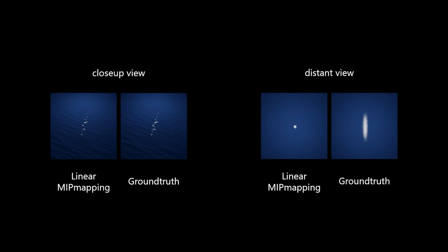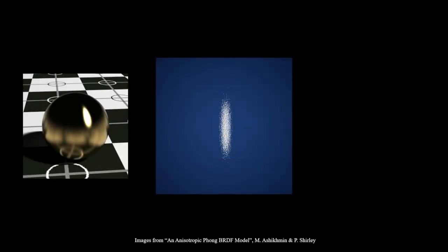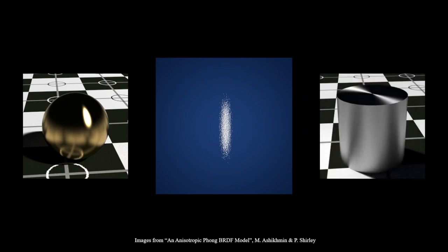When the view distance increases, linear mipmapping fails to preserve the correct highlight shown in the ground truth. Notice the oval shape of the final highlight. Anisotropic models provide a rich variety of highlight shapes and are well suited for this typical scenario.